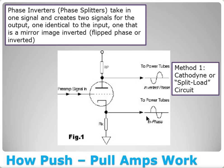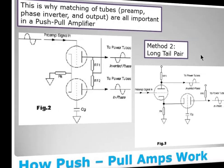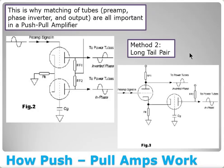In an amplifier using a cathode-dyne phase inverter, you will typically see a gain stage placed in front of it to amplify the input signal so it's of sufficient level before feeding the output tubes. You always need a second gain stage of some sort in an amplifier that uses a cathode-dyne circuit.